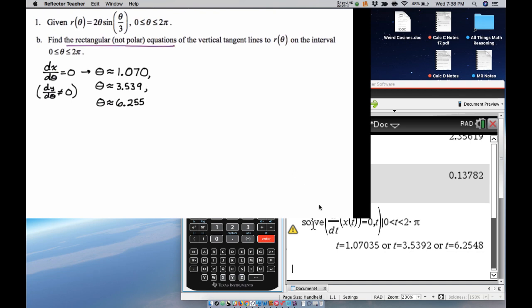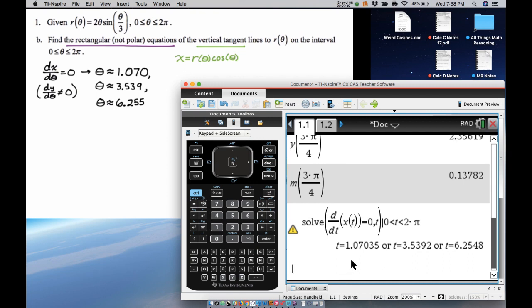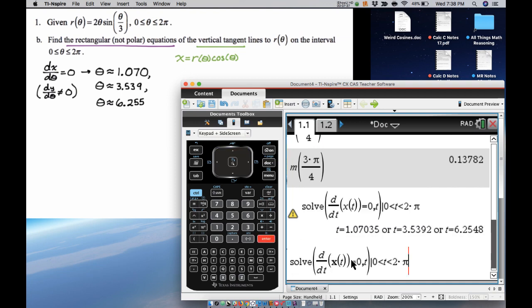And what I want to do now is I need to figure out the x values that go with them, because we're writing rectangular and vertical, so vertical lines are x equals. And what I'm going to do is I'm going to remember that x is r(θ) times cos(θ). So what I can do is, instead of solving from 0 to 2π, to get that first value, I'm going to solve just from 0 to 2, because there's one at 1.07, and that's definitely between 0 and 2, so it's just going to capture that.